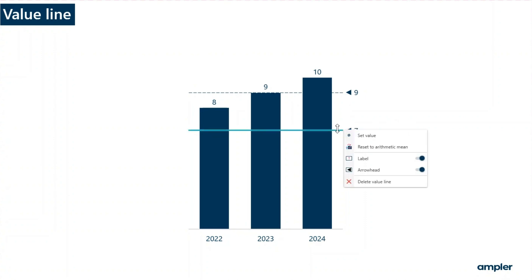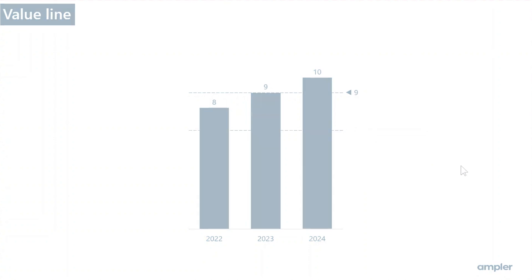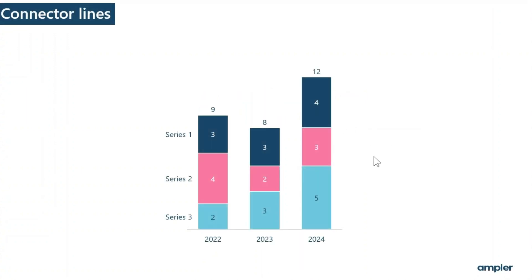From the context menu, you have options to remove the label and the arrow head from the value line. To emphasize the development across categories, you can add connectors.